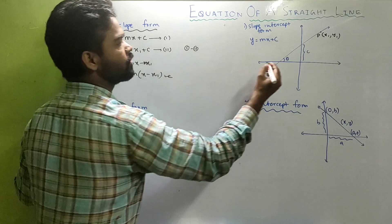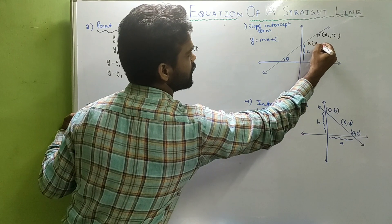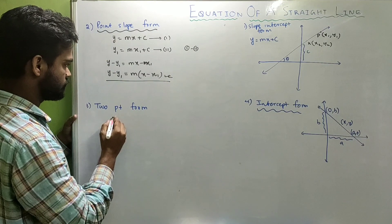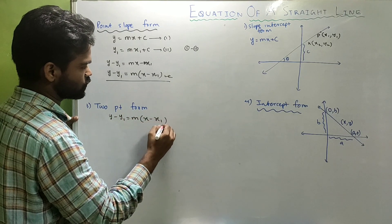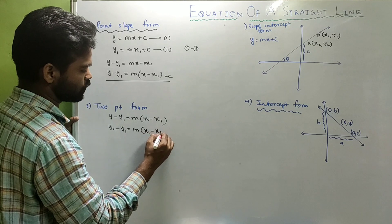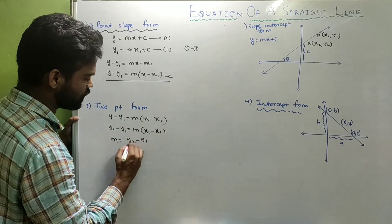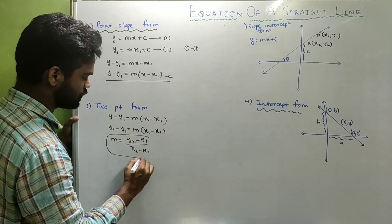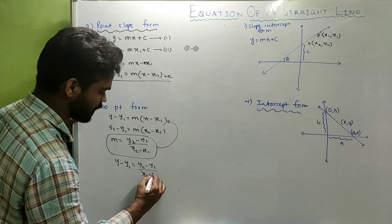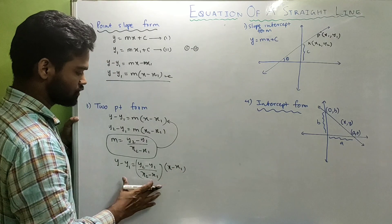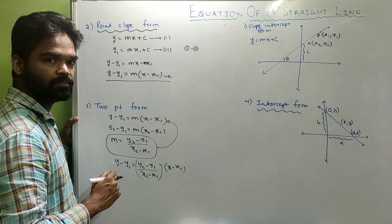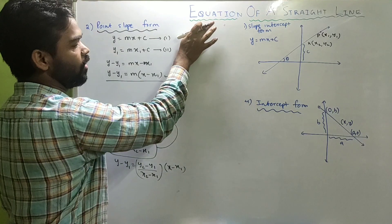For the two-point form, suppose another point B(x₂, y₂) also lies on the line. Substituting into y − y₁ = M(x − x₁) gives M = (y₂ − y₁)/(x₂ − x₁). Substituting back: y − y₁ = [(y₂ − y₁)/(x₂ − x₁)] × (x − x₁). Use this formula when two points are known.